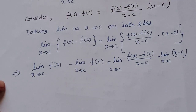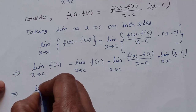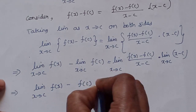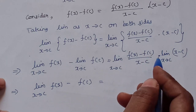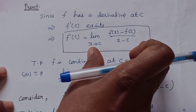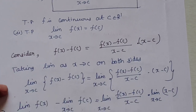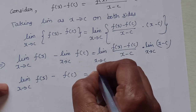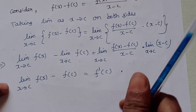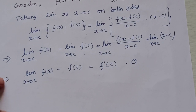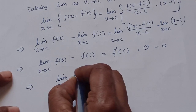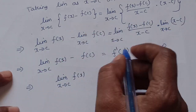By the product rule for limits, the right-hand side becomes the limit as x tends to c of [f(x) minus f(c)] divided by [x minus c], multiplied by the limit as x tends to c of [x minus c]. The first limit is f'(c) — since f has a derivative at c, this limit exists and equals f'(c). The second limit as x tends to c of [x minus c] equals 0. So the right-hand side equals f'(c) times 0, which is 0.